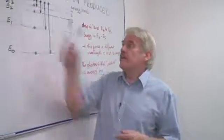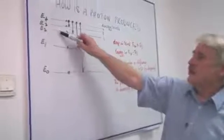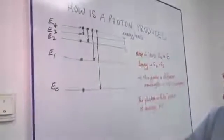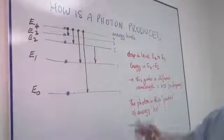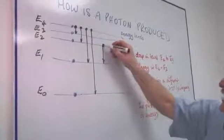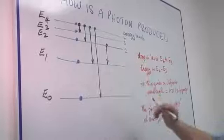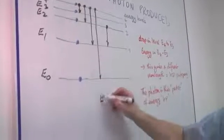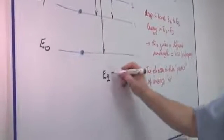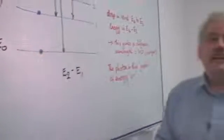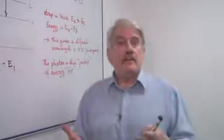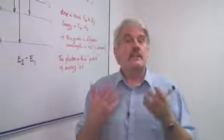But when the electron, say in level two, falls down into a level one, we can see that there is a difference in energy. And the difference in energy here would be E2 minus E1. So there is a change in energy. That energy is lost. So where does it go?